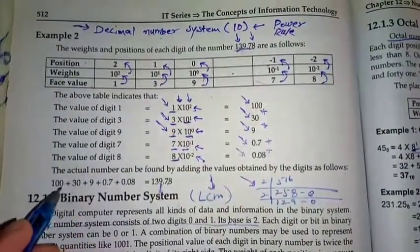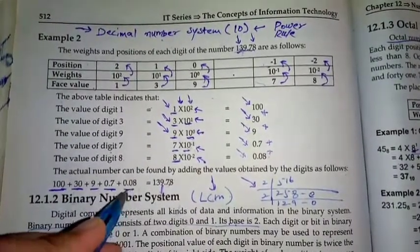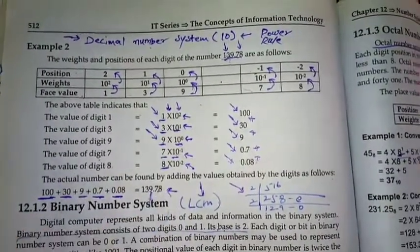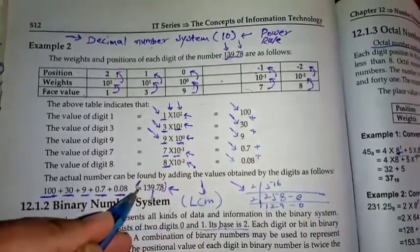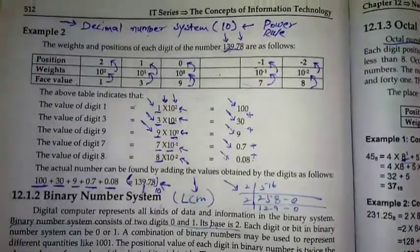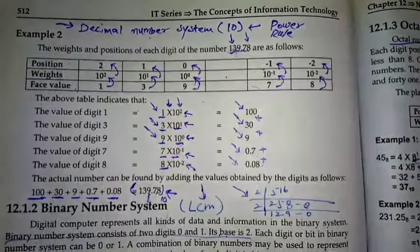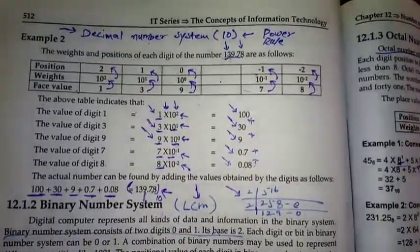After adding, we have 139.78 in base 10. Okay, so this is how you can make a decimal number system. So gonna see you in the next video. Goodbye.